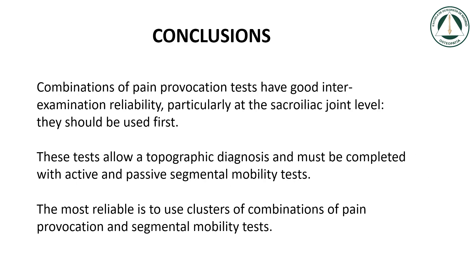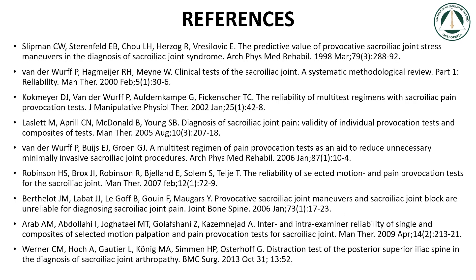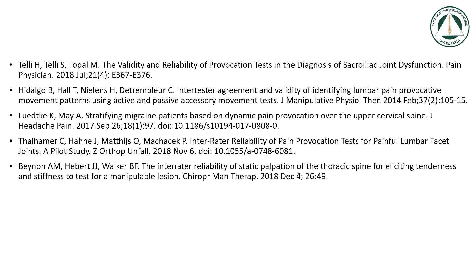Conclusions: Combinations of pain provocation tests have good inter-examination reliability, particularly at the sacroiliac joint level. They should be used first. These tests allow a topographic diagnosis and must be completed with active and passive segmental mobility tests. The most reliable approach is to use clusters combining pain provocation and segmental mobility tests. Here we have the references of the scientific articles used in this conference. Thank you for listening.